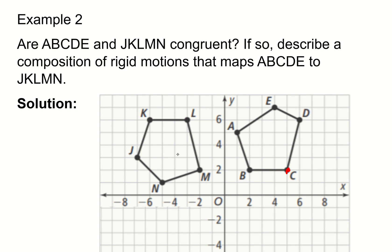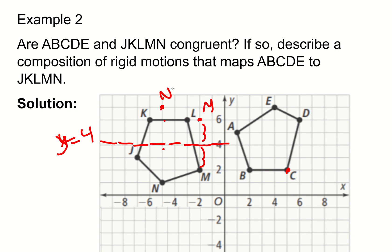Reflecting across Y equals four: M is two units below that line, so it will be two units above after reflection. N is three units below, so it will be three units above. K would be two units below, J would be one unit, and L would be two units. Drawing the reflected figure gives us the approximate shape of JKLMN.